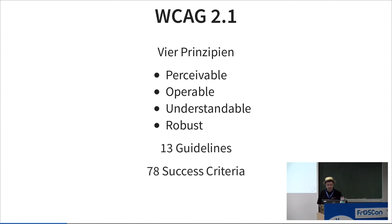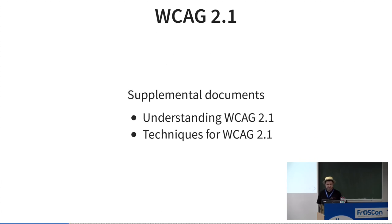These are split into 13 guidelines and 78 success criteria which describe the various requirements for accessible web pages. There are also supplemental documents: 'Understanding the Web Content Accessibility Guidelines,' which describes the intent of the success criteria in detail, and 'Techniques for WCAG,' which describes how to implement them.